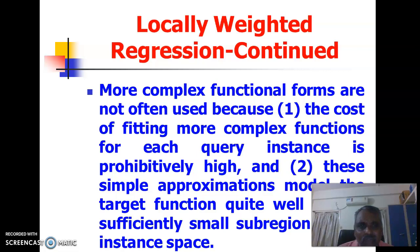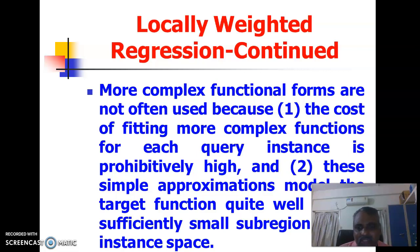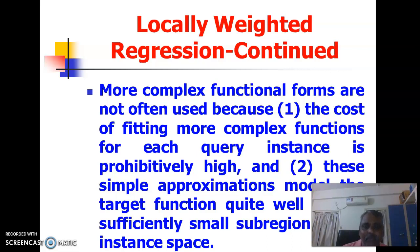More complex functional forms are not often used for two reasons: first, the cost of fitting more complex functions for each query instance is prohibitively high in terms of computational complexity. Second, simple approximations model the target function quite well over a sufficiently small sub-region of the instance space. So why go for complex functions?